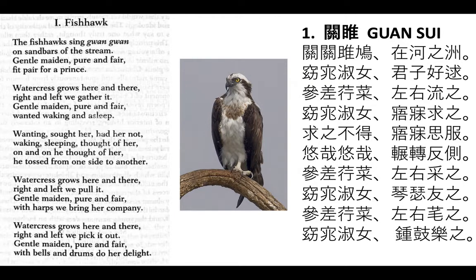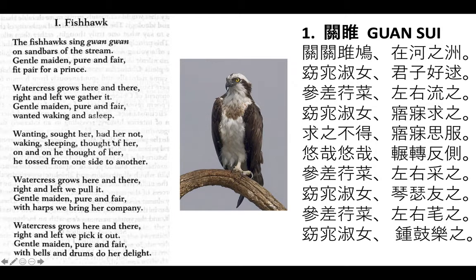Let's return to the tips for lyric poetry reading. I invited you to think about the speaker. Where is the "I"? Where are first person pronouns happening here? We see people populated — first it's a fishhawk, then there's a maiden, there's watercress, then wanting, sought her, had her not, waking, sleeping, he thought of her. Finally we get a subject — it's a he.